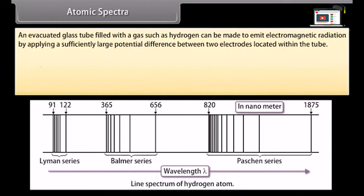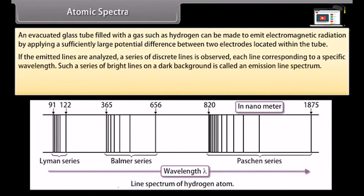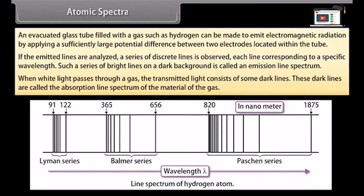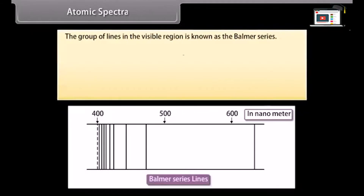Atomic spectra: An evacuated glass tube filled with a gas such as hydrogen can be made to emit electromagnetic radiation by applying a sufficiently large potential difference between two electrodes. If the emitted light is analyzed, a series of discrete lines are observed, each corresponding to a specific wavelength. Such a series of bright lines on a dark background is called an emission line spectrum. When white light passes through a gas, the transmitted light consists of some dark lines, called the absorption line spectrum of the material of the gas.